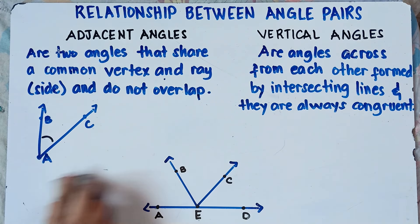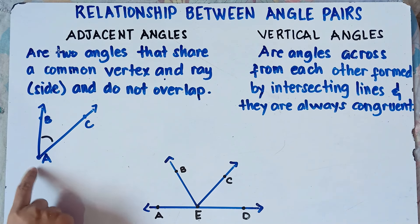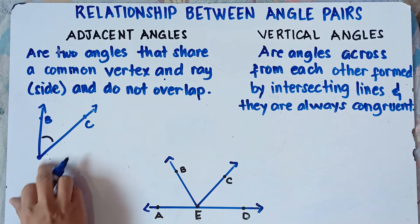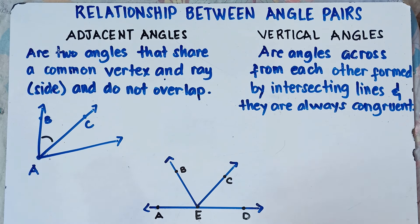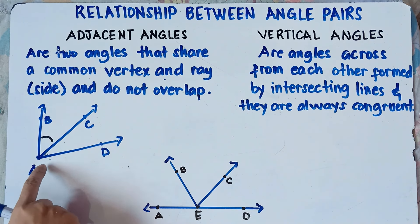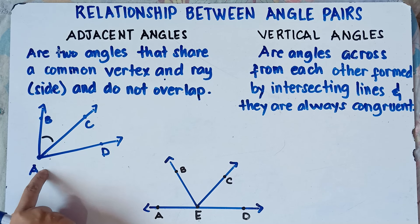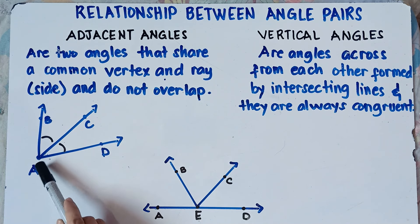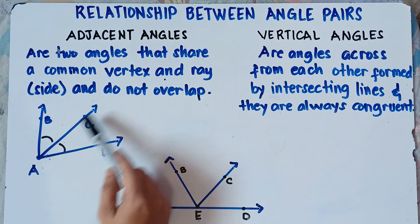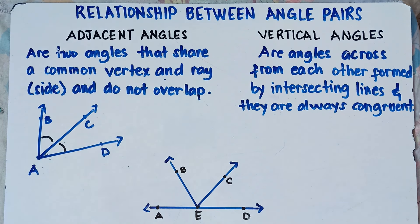Now if we draw another ray at this vertex A, we can form another angle. Let me label this one as point D. We draw another ray with the same common vertex, that is A, and we can form another angle right here. These two angles are what we call adjacent angles. The adjacent angles have the same common vertex, that is A, and they share a common side, or common ray, that is ray AC.